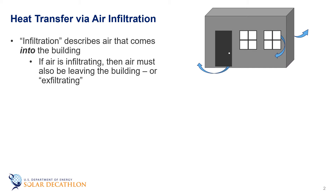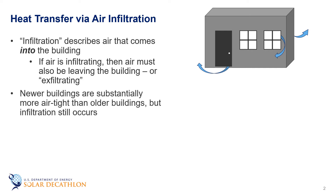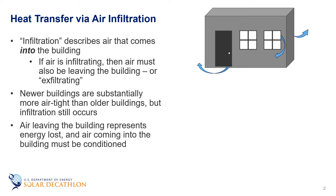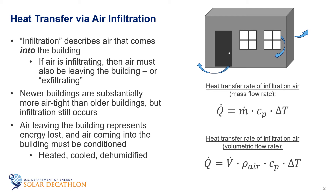In a previous episode we discussed the impacts of infiltration and exfiltration. We said that building envelopes are filled with cracks and have materials that are permeable to air. In older buildings these show up as cold drafts in the wintertime and can also cause comfort issues. Most new buildings have substantially reduced these leaks, but they are still there. Air leaving buildings is energy lost and the air that comes in must be conditioned — either heated in the heating season or cooled and dehumidified in the summertime. We discussed the equations to calculate this heat loss or gain in a previous episode and realized that it can be a significant portion of the total heating and cooling needs of a building.